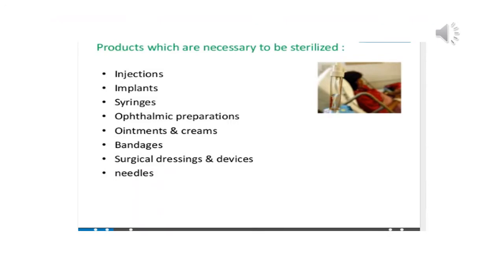Not all the products need to undergo sterility testing. Sterility testing is performed on products which are directly coming in contact with your body fluids, which are coming in contact with your blood, or which are coming in contact with direct wounds. For example, sterility testing needs to be done on products such as injections, implants, syringes, ophthalmic preparations, ointments and creams — basically ointments which are to be put inside your eye — bandages applied on open wounds, surgical dressings and devices, and needles used for syringes.